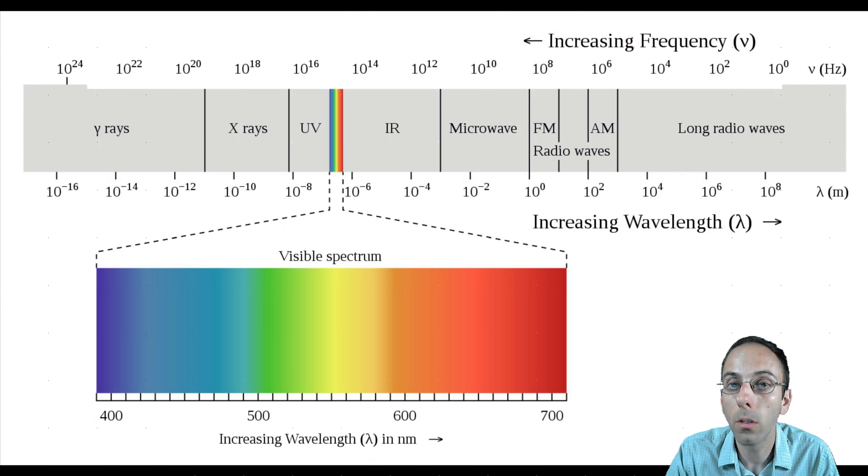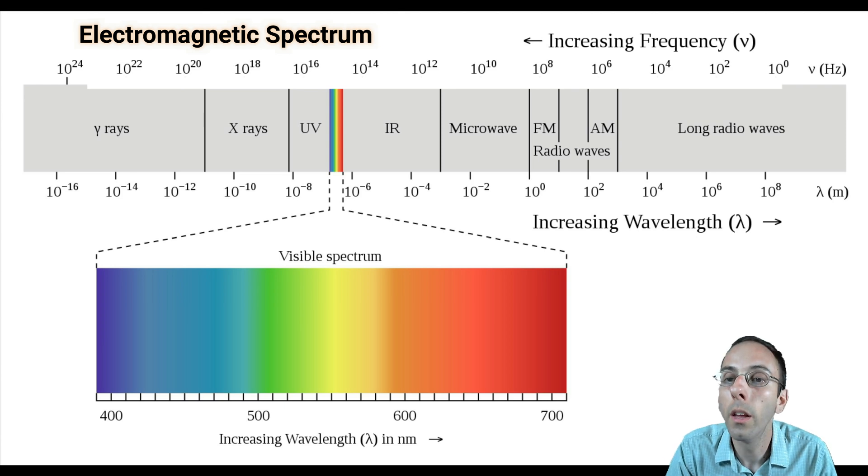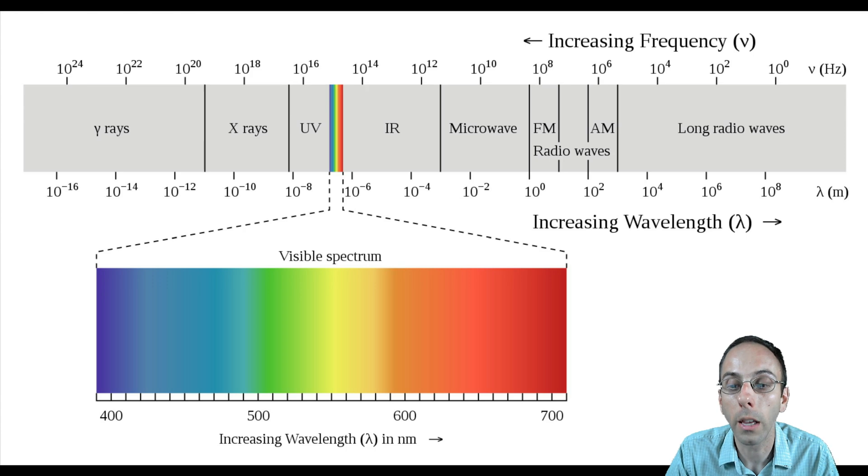This all comes back to the electromagnetic spectrum. You can see visible light being a very small portion of it, but we're really focusing in on this area, which is the reason why we have different colors because of the different wavelengths. The different wavelengths are measured in nanometers.